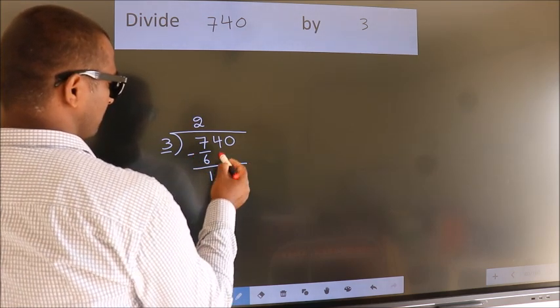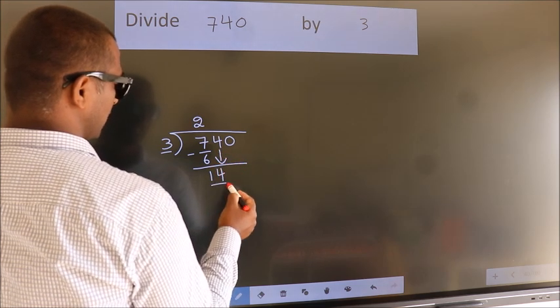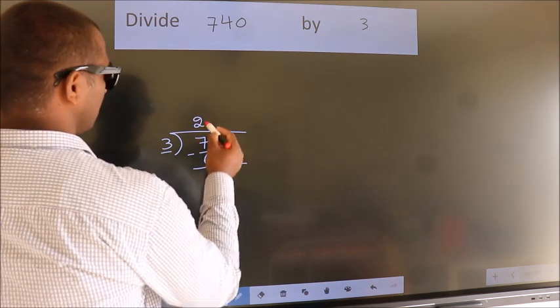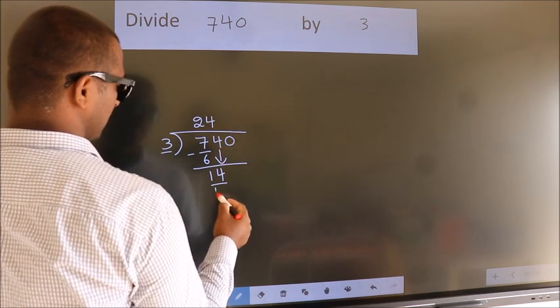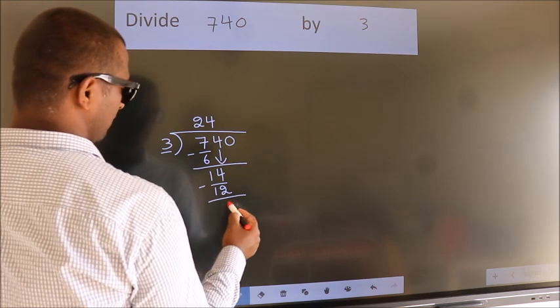After this, bring down the beside number. So 4 down, 14. A number close to 14 in the 3 table is 3 times 4 is 12. Now we subtract. We get 2.